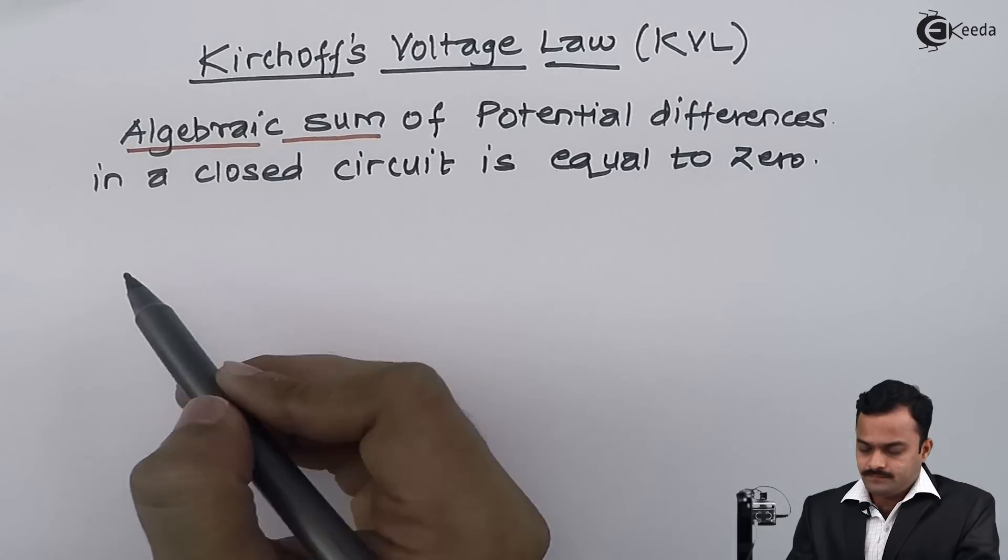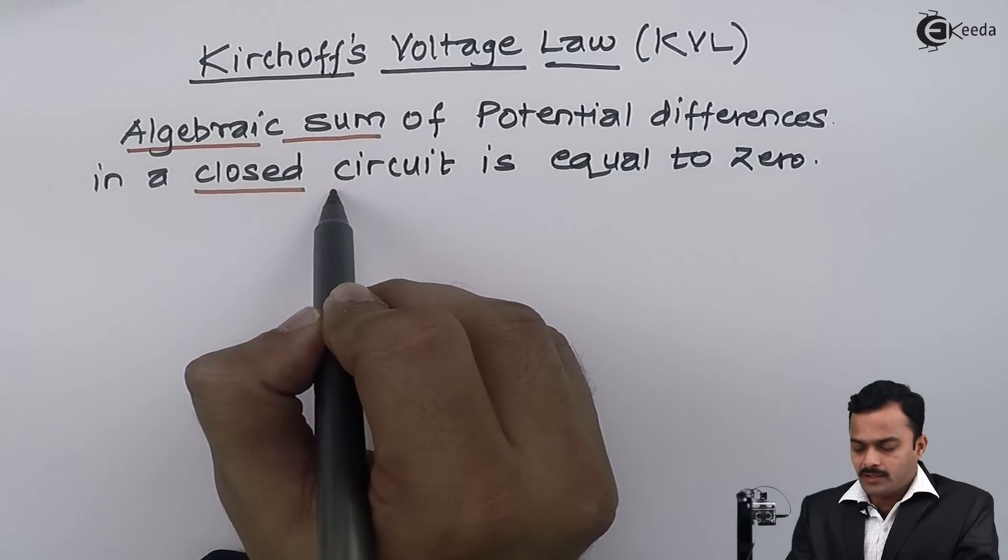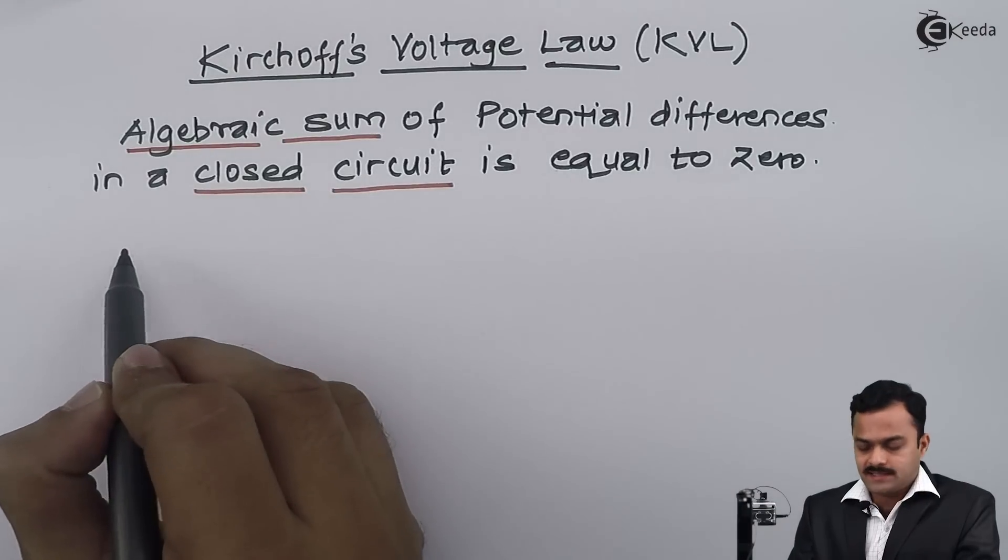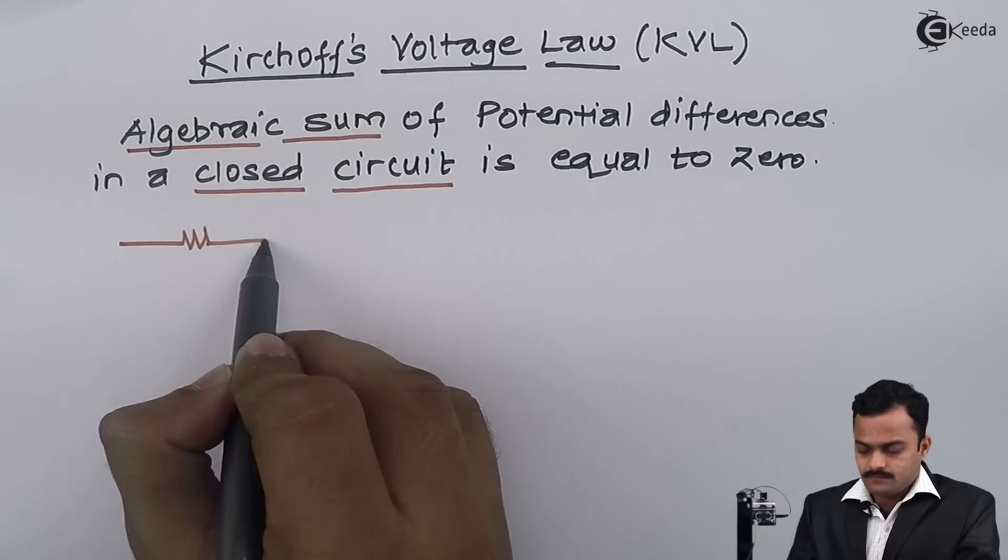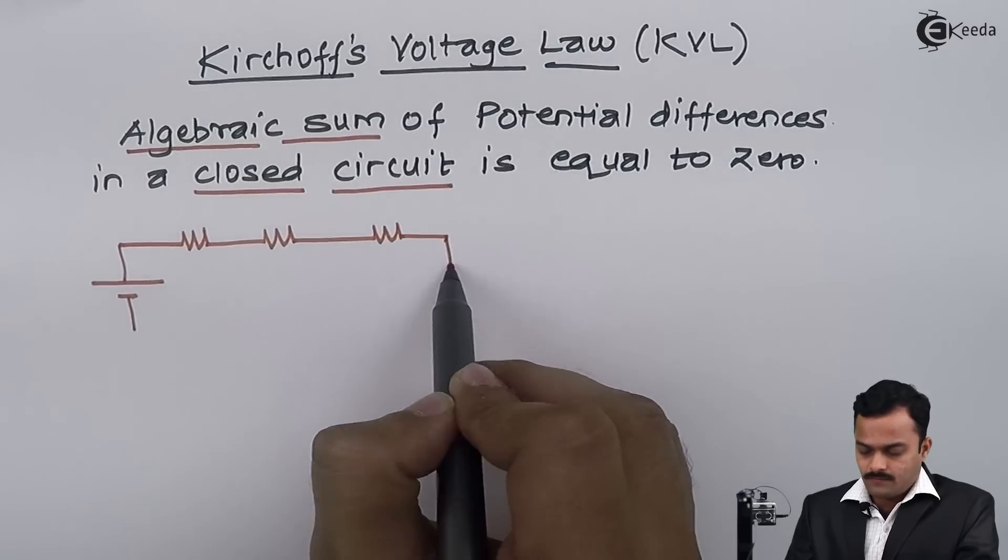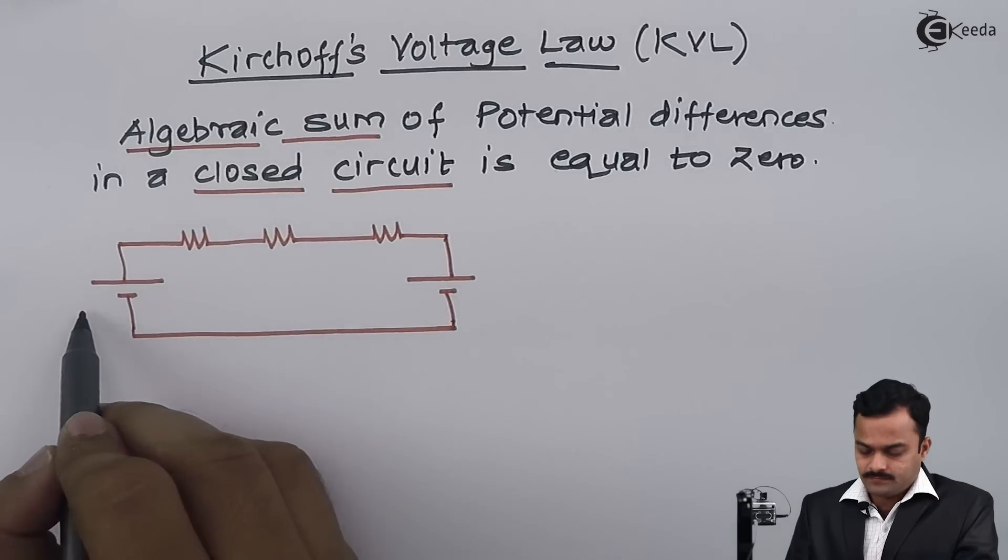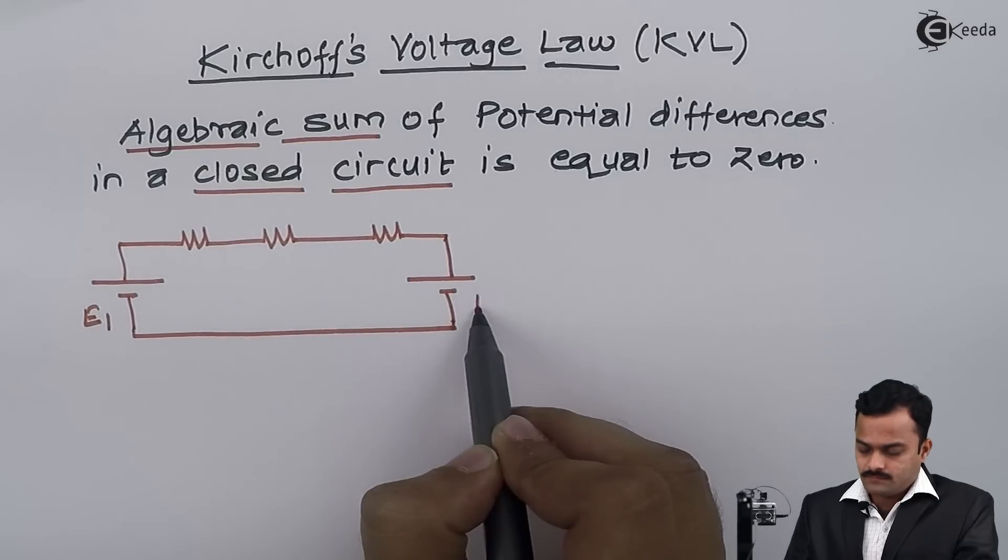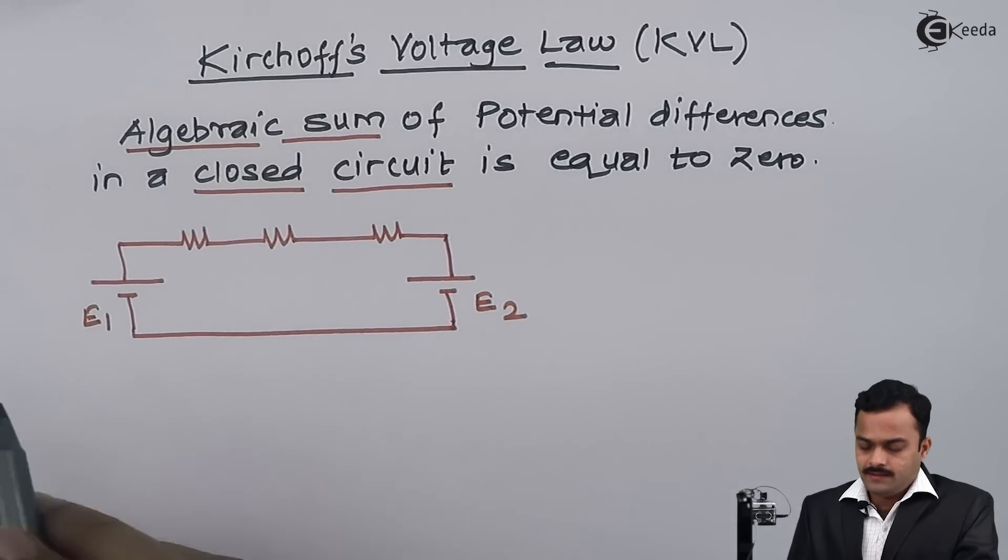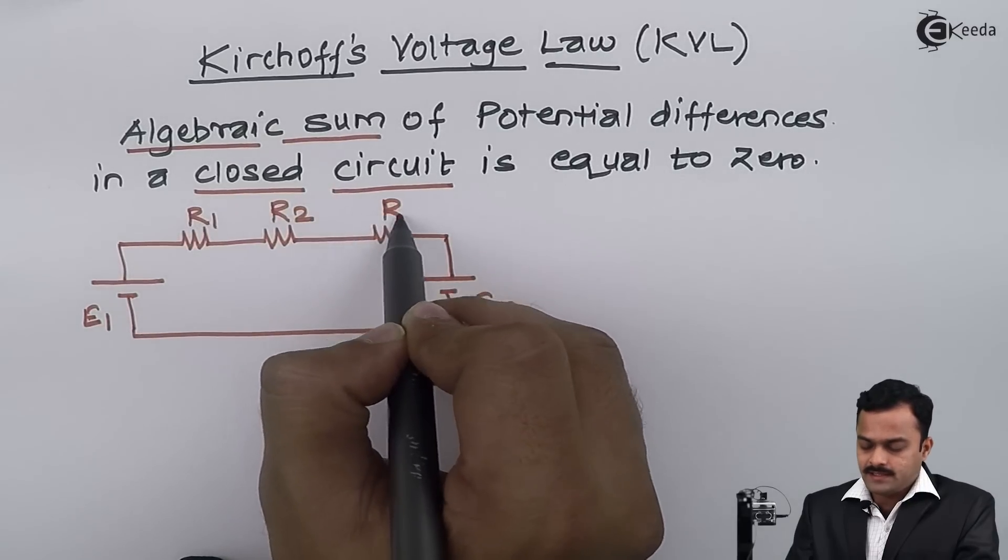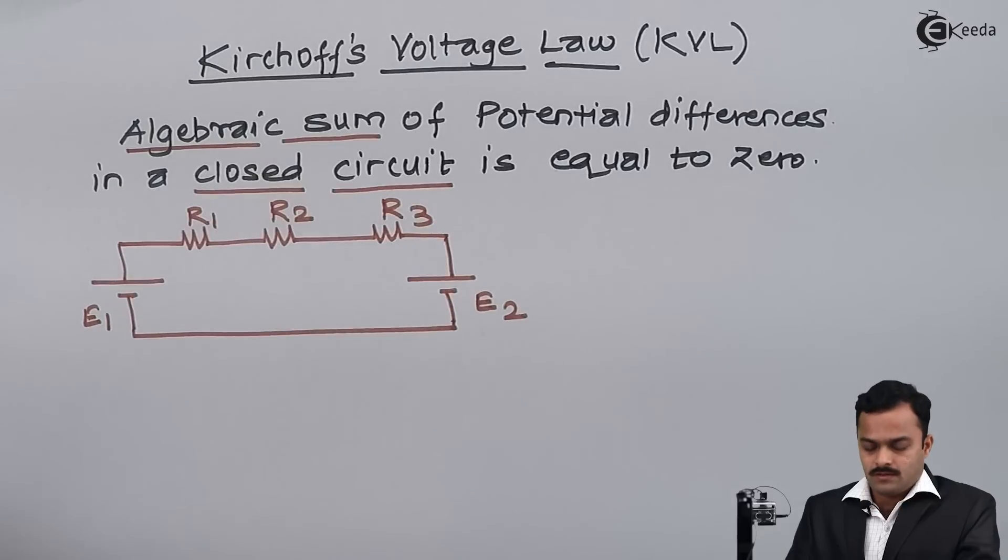The important concepts here are algebraic sum and what is the meaning of closed circuit. To elaborate this, I will consider a simple circuit like this. I'm having two batteries and three resistances connected in series, so obviously it is a closed circuit.